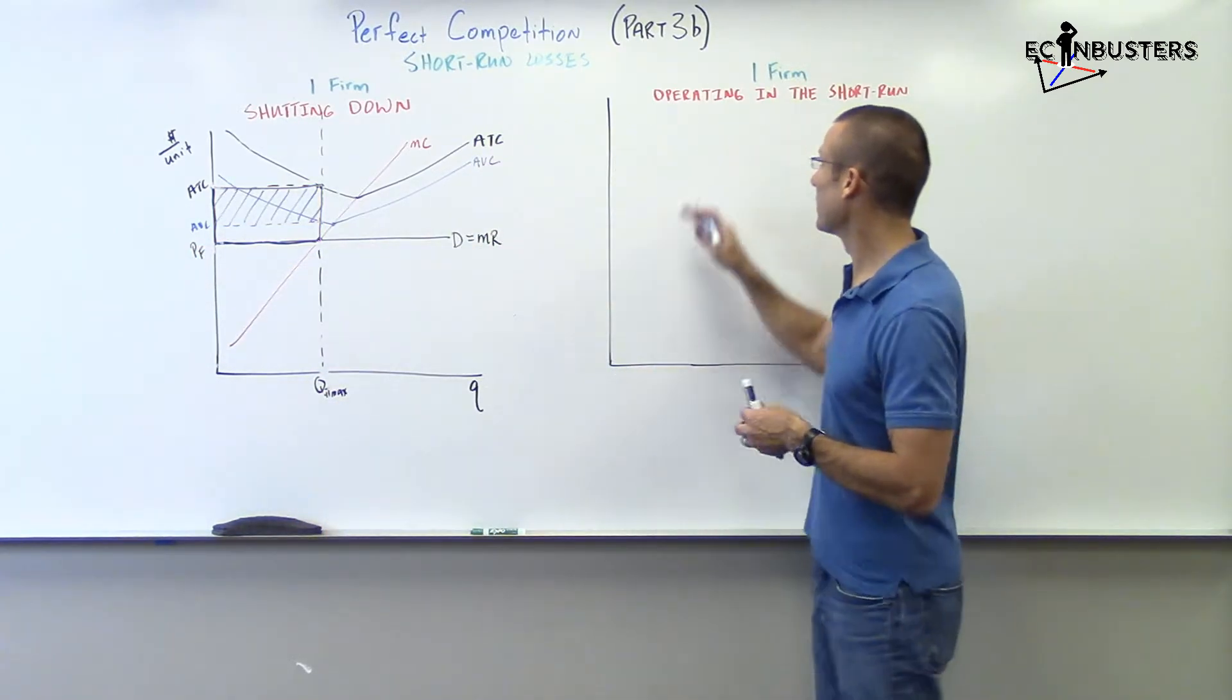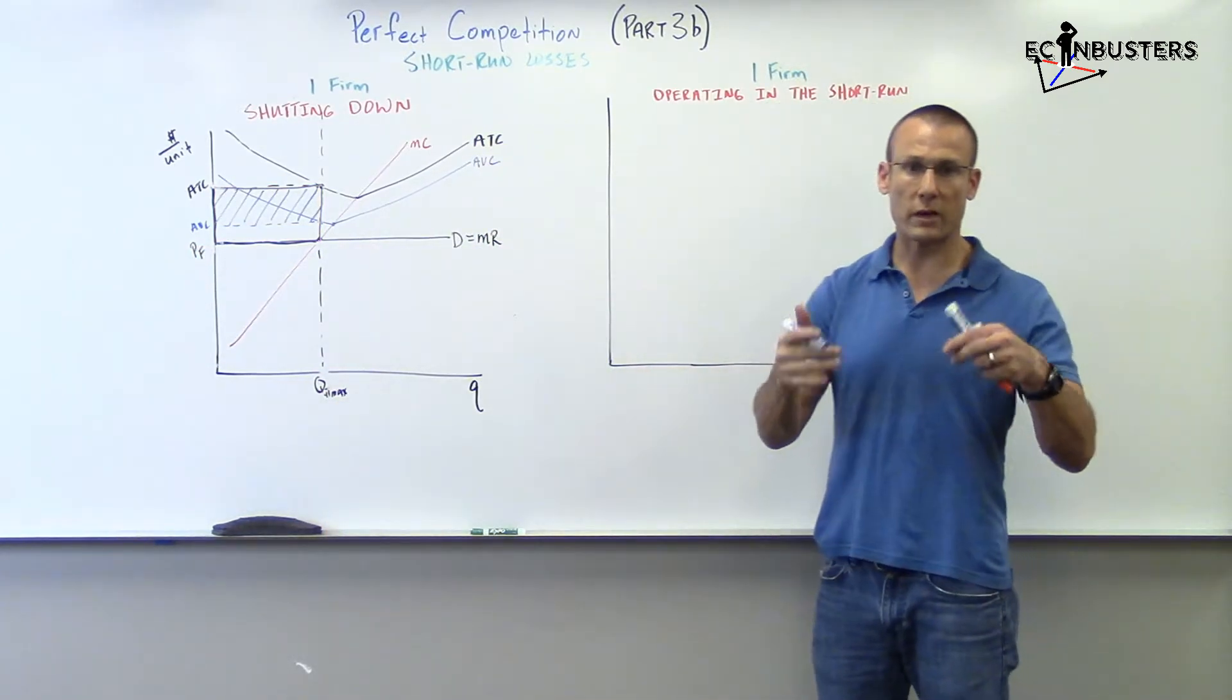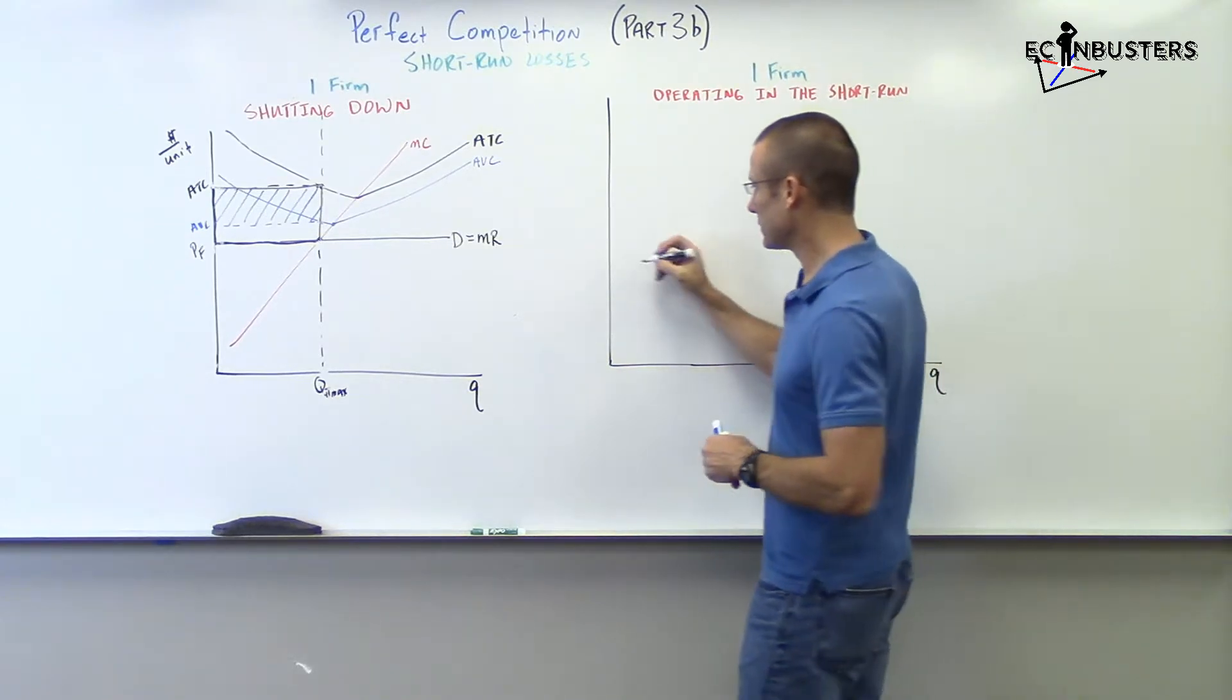Incur your fixed cost, but don't add any more losses. If you operate, you won't just incur this. You will incur additional losses. Why will you incur additional losses? Because your AVC is above your price. Let's go to this graph real quick. Operating in the short run. A situation that the firm actually would operate in the short run.